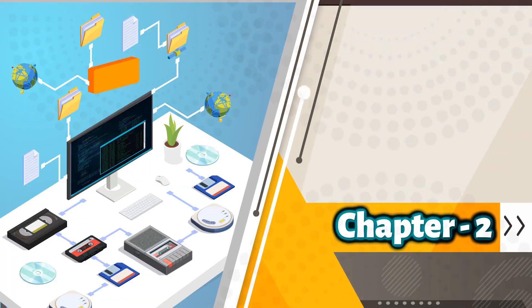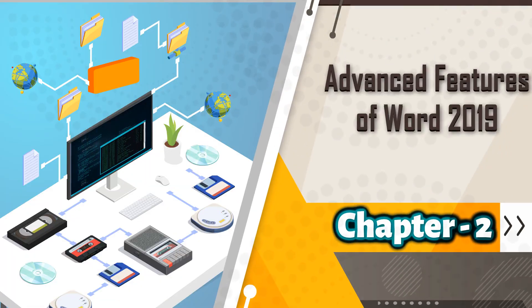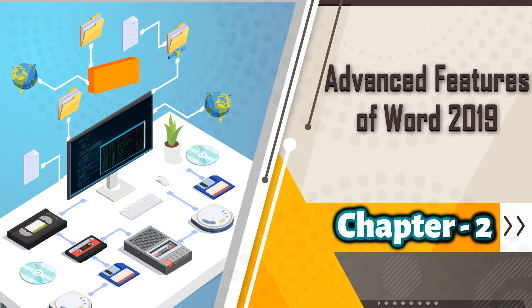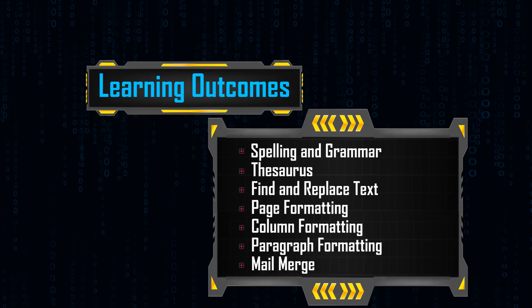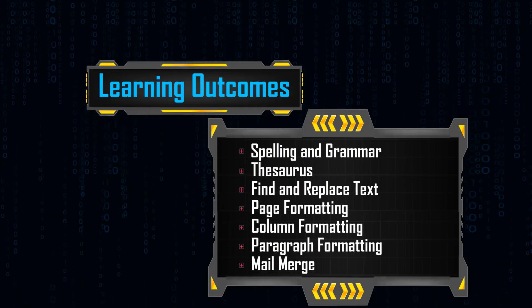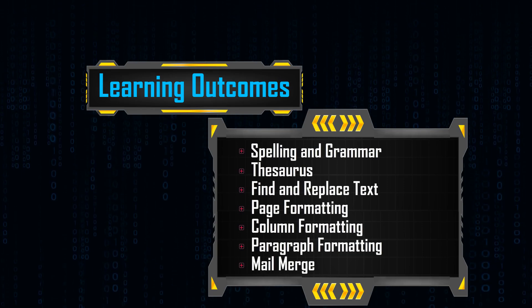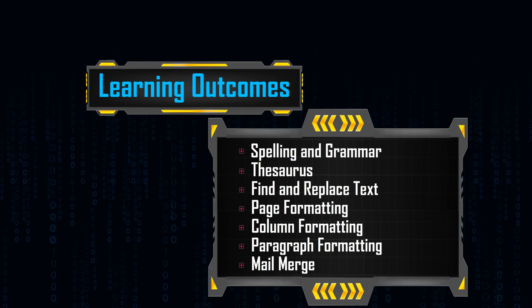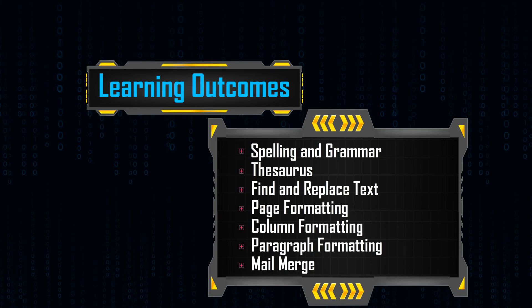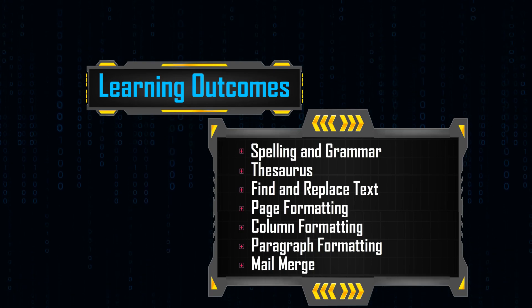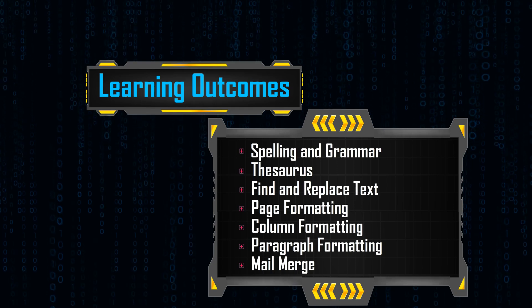Chapter 2: Advanced Features of Word 2019. Learning Outcomes: Spelling and Grammar, Thesaurus, Find and Replace Text, Page Formatting, Column Formatting, Paragraph Formatting, and Mail Merge.